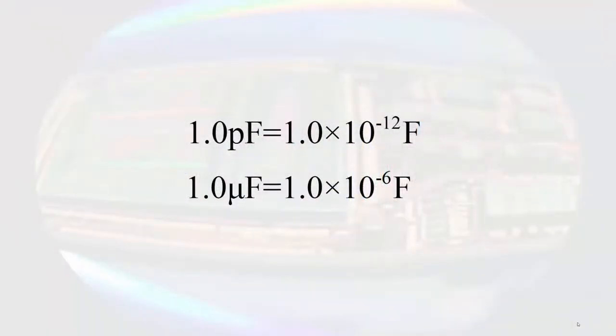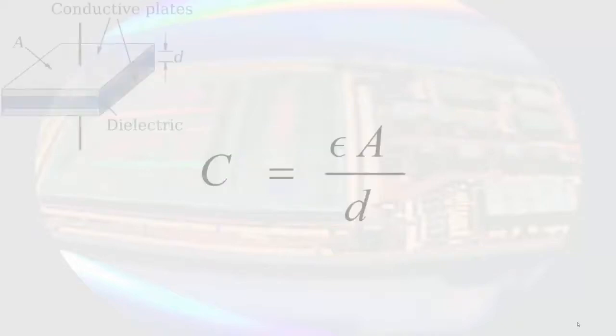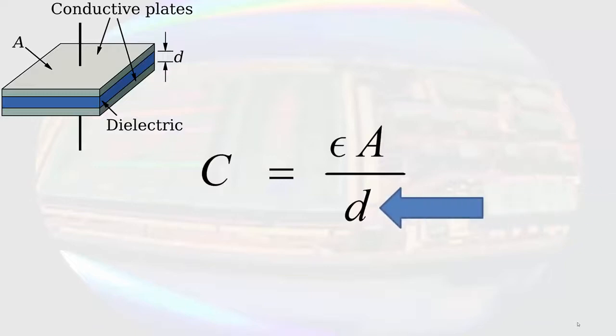So if a capacitor requires a lot of area to increase the capacitance, what are some ways that we can increase the capacitance without needing an unreasonable amount of geometric space? One thing that can increase the capacitance of the component would be to decrease the separation between the plates, sometimes down to tens of microns. This can dramatically reduce the area needed to make a particular capacitor.